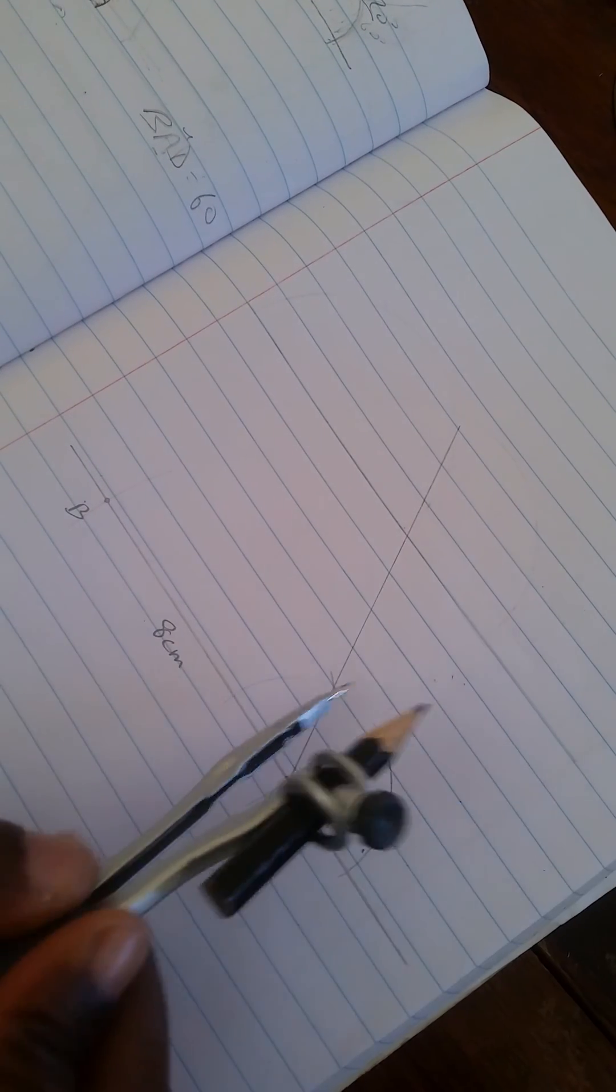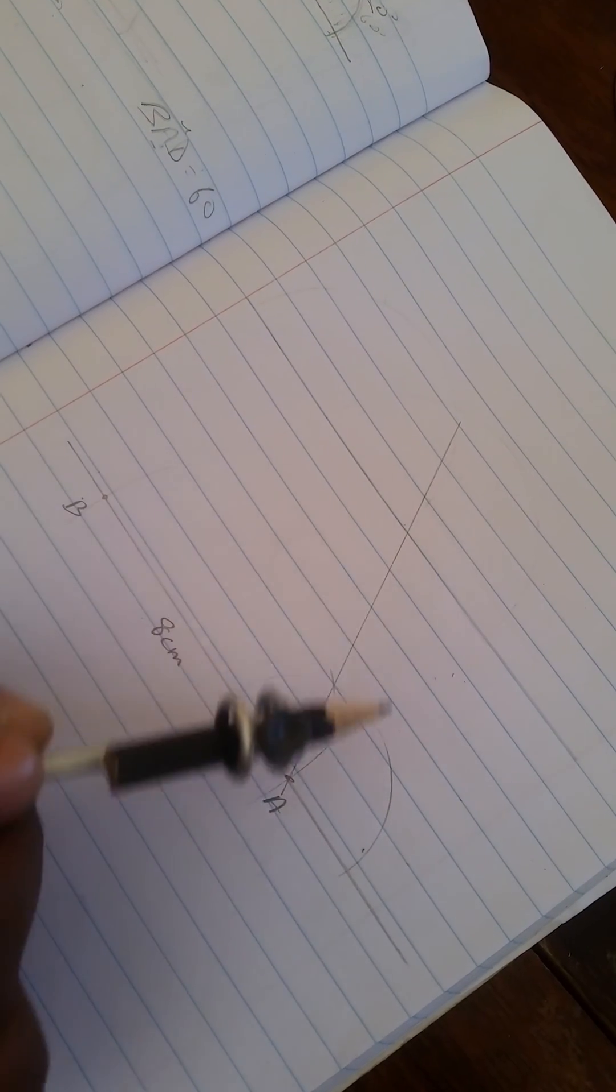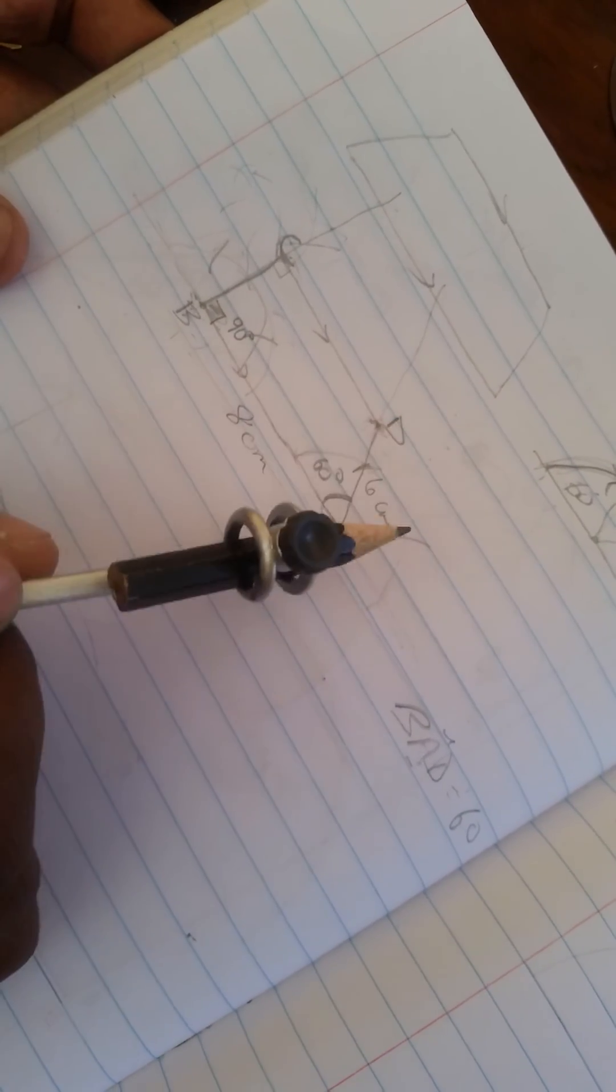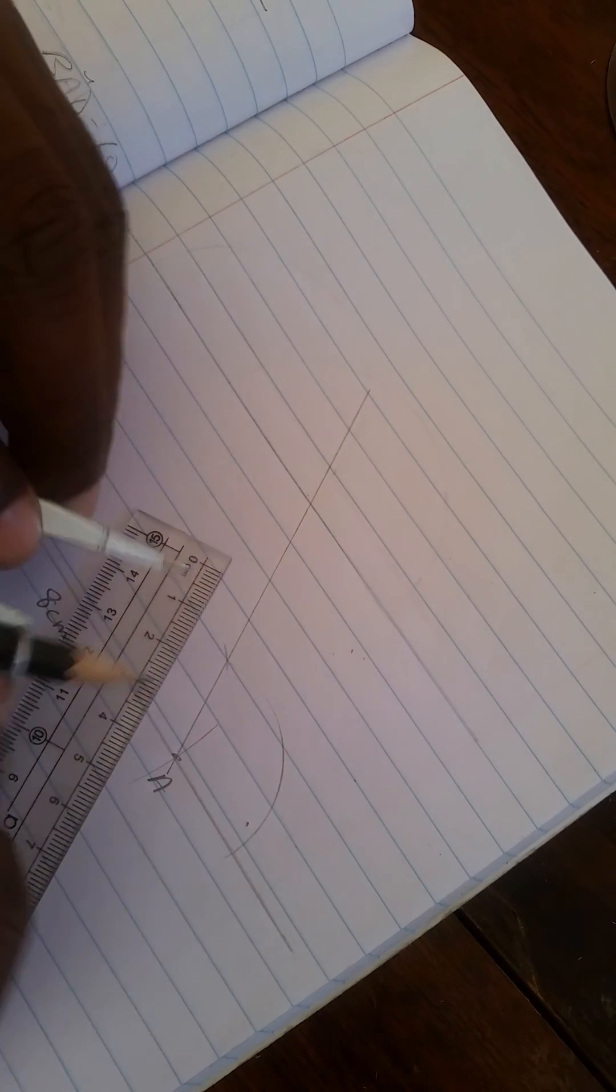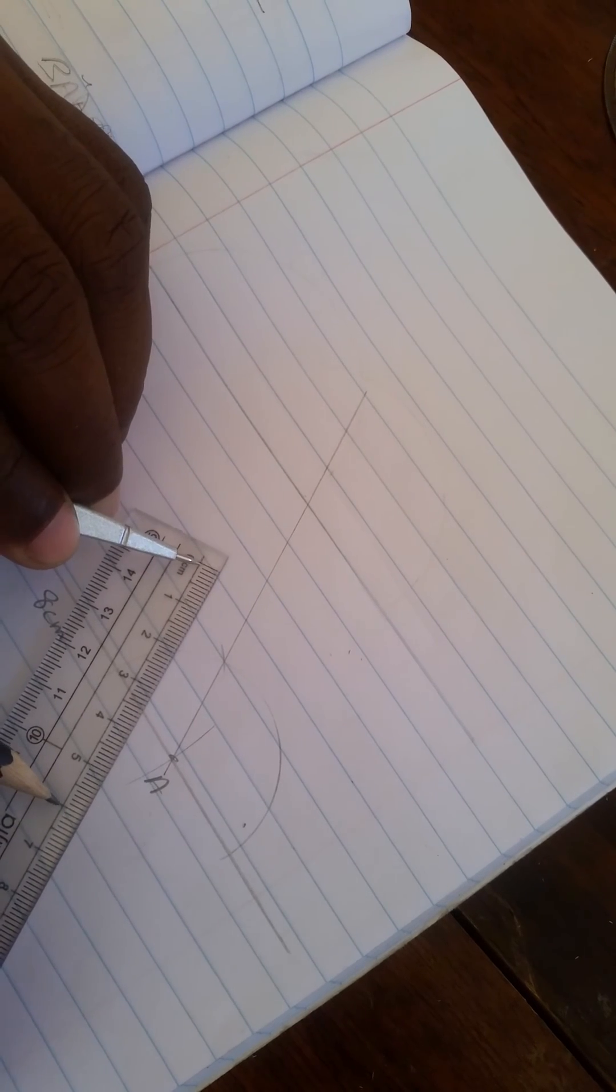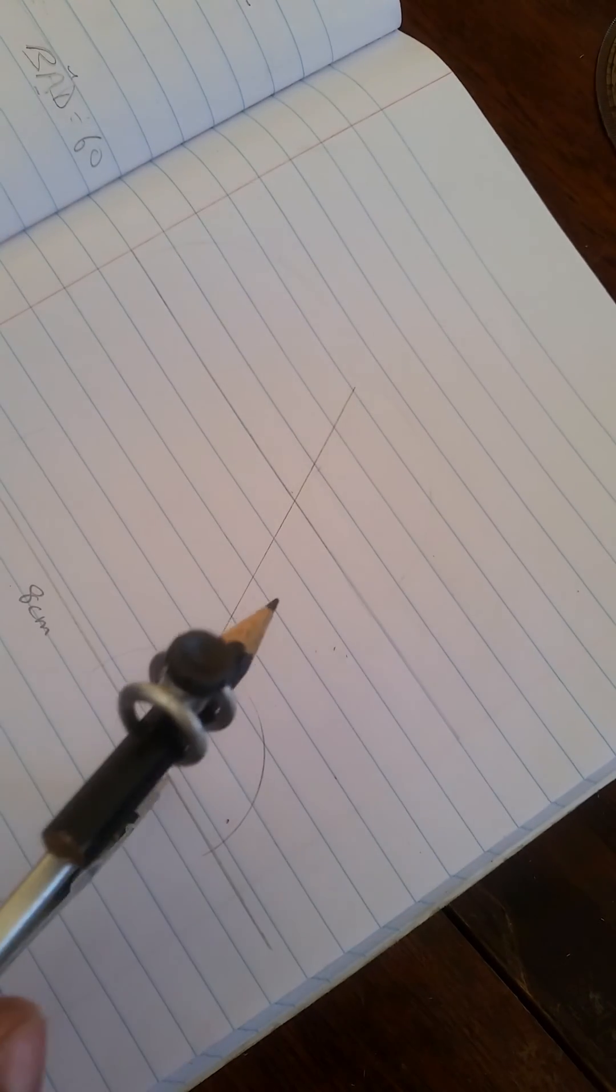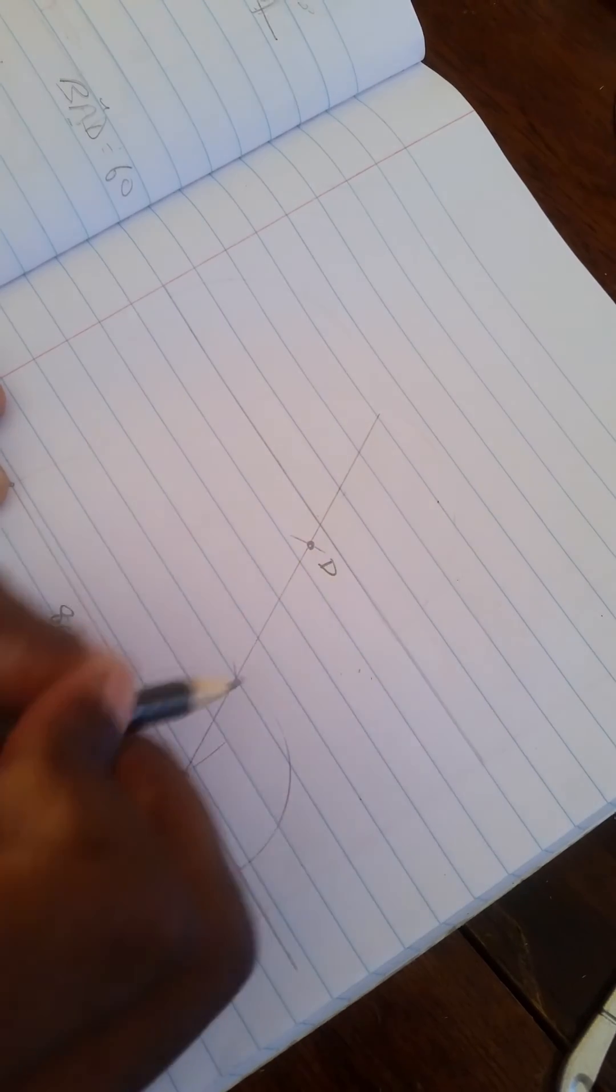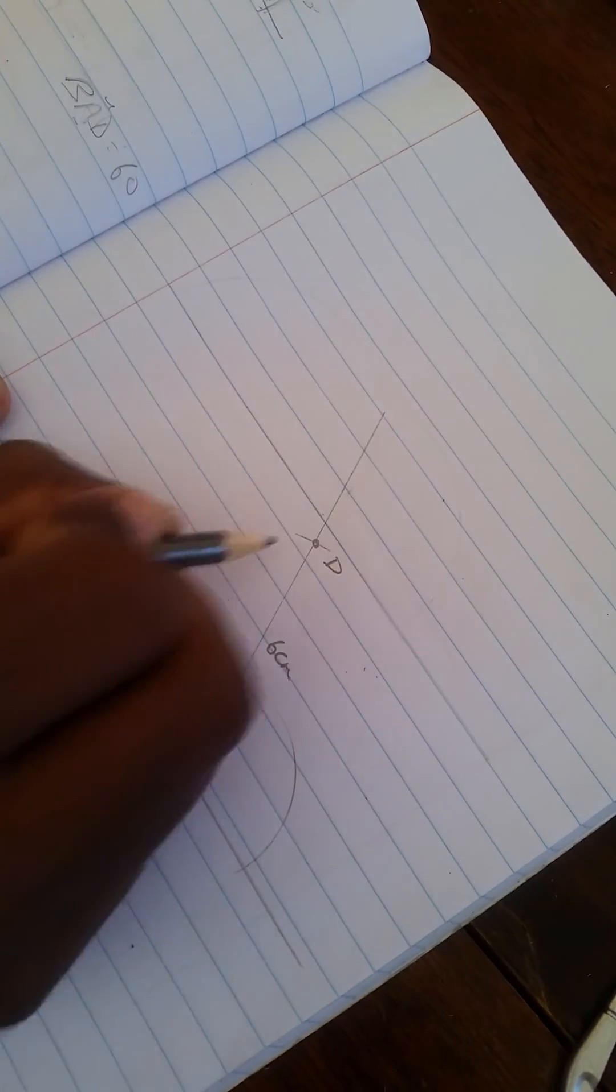Alright, now D will be somewhere along this line, based on my sketch. D should be here, at 6 centimeters away from A. So I can get that in, 6 centimeters on the ruler. So I can actually measure it off, 6 centimeters. Make sure it's 6 centimeters. And then I go at A and scribe an arc on the line. So this point here will be D. And this is actually 6 centimeters, from A to D.